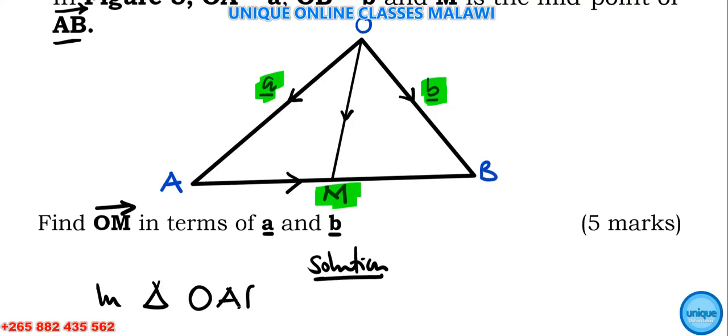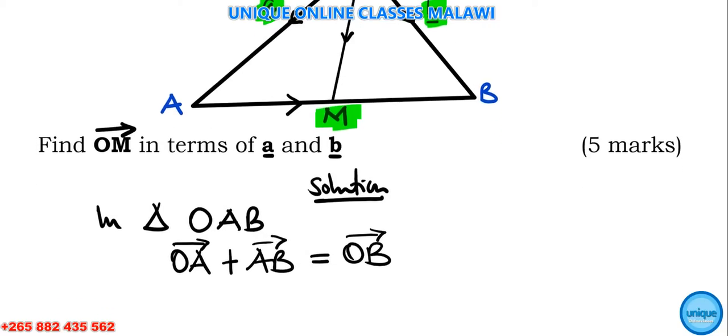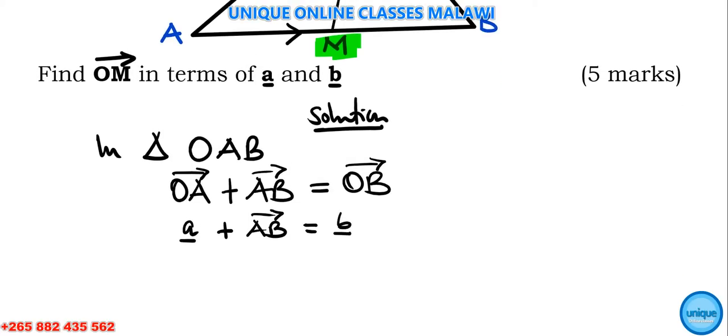In triangle OAB: OA + AB = OB. So we write a + AB = b. To find AB, we move a to the right-hand side, so AB = b - a.